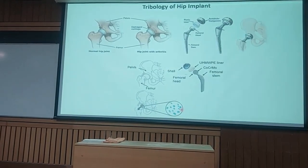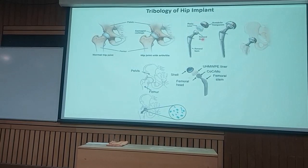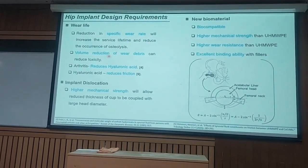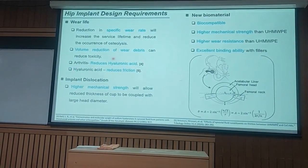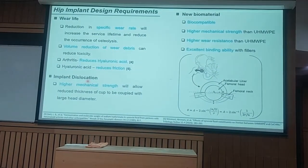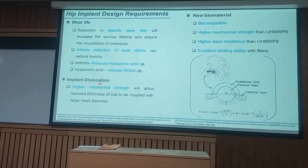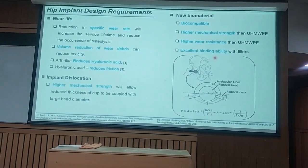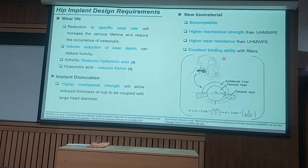The idea is to avoid this failure by reducing wear — almost getting wear to zero. That is why our focus is to find a suitable polymeric material; I focus on the polymer part. The design requirements include reducing the specific wear rate, volume reduction, finding ways to lubricate the contact surface, and avoiding implant dislocation. A lot of emphasis is on finding new biomaterials — new materials that can be used for this specific application.